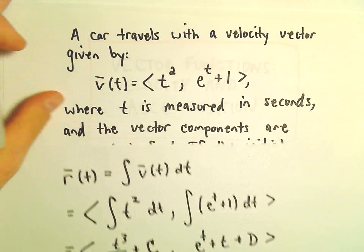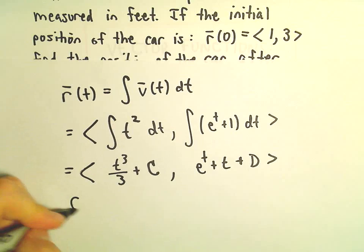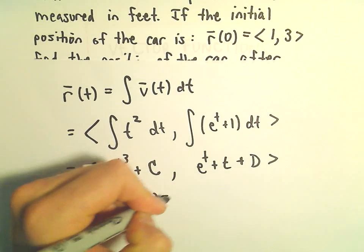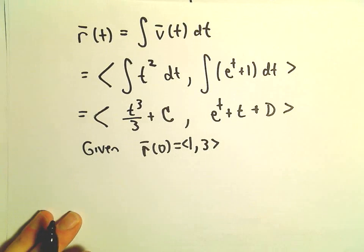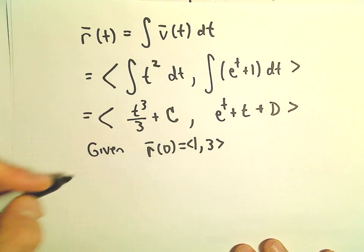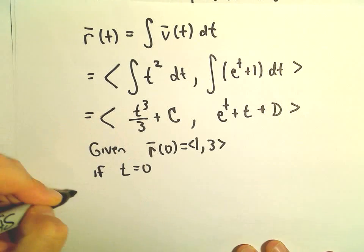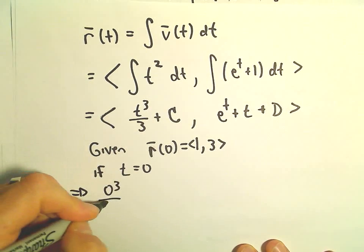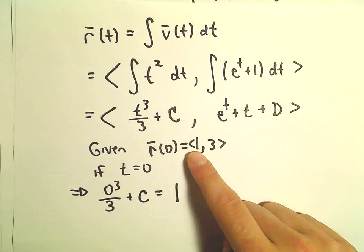But we were given an initial condition: r(0) = <1, 3>. So now we can simply plug that in. If t = 0, the first component would be 0³/3 + c, which would have to equal 1.